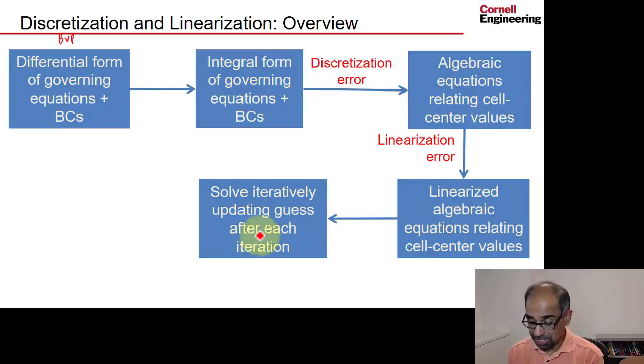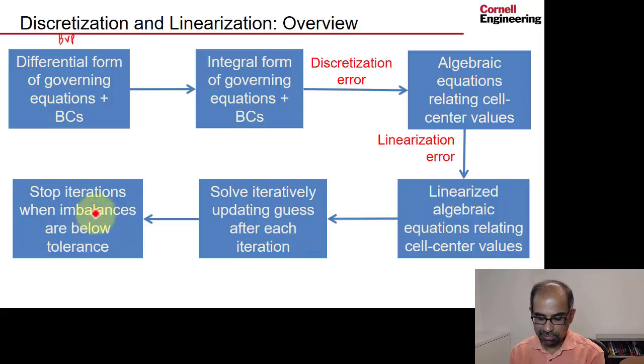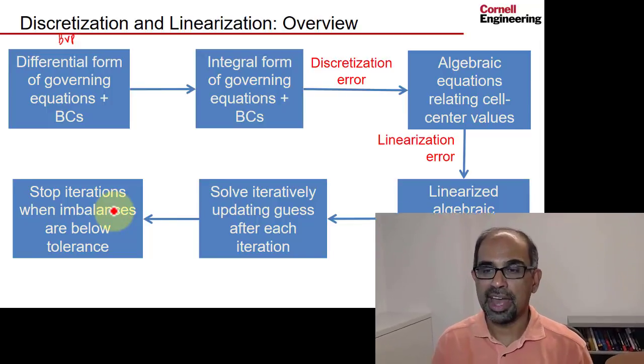And so these linearized equations have to be solved iteratively, updating the guess. So you keep updating the guess until you get to a satisfactory solution. And the satisfactory solution is when the imbalances are below tolerance, imbalances of mass, momentum, energy. So you can go to each cell and figure out what the mass imbalances, momentum imbalances, energy imbalances, and when they fall below tolerance, that's a good enough solution to my algebraic equations. We'll monitor the linearization error by checking the mass, momentum, and energy imbalances.